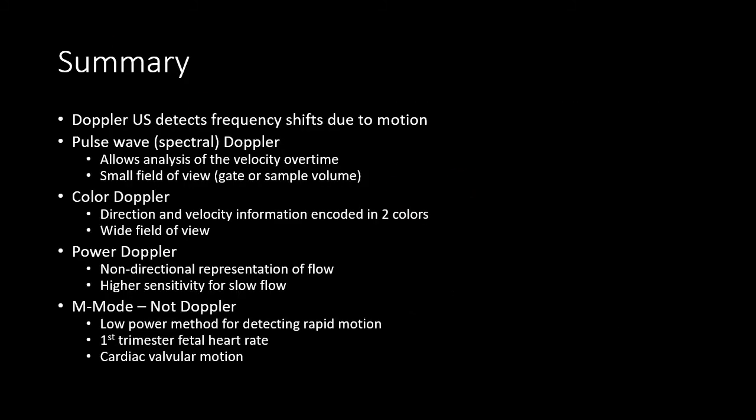In summary, Doppler ultrasound detects frequency shifts due to motion. Pulse wave or spectral wave Doppler ultrasound is a quantitative form that allows for the measurement of velocity over time, but is limited by a small gate or sample volume and has a relatively high thermal and mechanical index. Color Doppler ultrasound is a more qualitative form where direction and velocity are encoded in typically two colors with variable brightness, with a wider field of view than pulse wave Doppler. Power Doppler is a non-directional representation of flow whose main advantage over color Doppler is higher sensitivity for slow flow. M-Mode is not truly Doppler, but is a good low power imaging modality for detecting rapid motion, used predominantly for determining first trimester fetal heart rate and evaluating cardiac valvular motion.